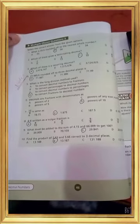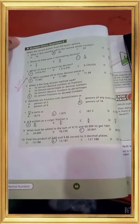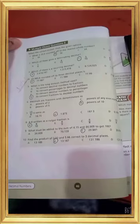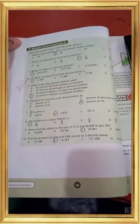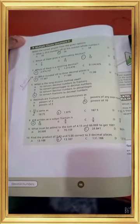Find the product of 2.3t and 5.6s, correct to 3 decimal places. Product means multiplication. Multiply these two numbers. We get 13.187.